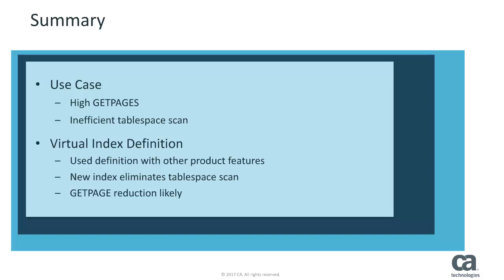Today, Lynn addressed a problem with a high number of GET pages. She determined that the GET pages issue was due to a SQL statement that was accessing the department's table using an inefficient tablespace scan. Lynn created a Virtual Index Definition and used this definition with other CA Plan Analyzer features to determine that a new index based on the virtual index definition would eliminate the tablespace scan and likely reduce the number of GET pages.